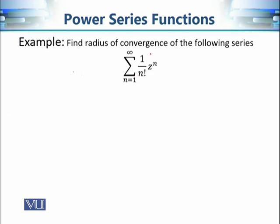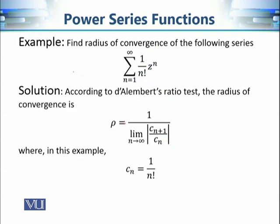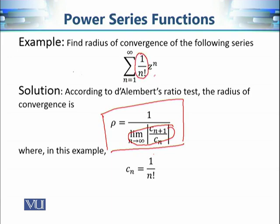Let's consider another example where the expression is quite simple. Here alpha is 0 and Cₙ = 1/n!. If we take the nth root of |Cₙ|, we get a very complicated expression, so Cauchy's root test or Cauchy-Hadamard root test would be difficult to apply. Our only option is to use D'Alembert's ratio test to find the radius of convergence.